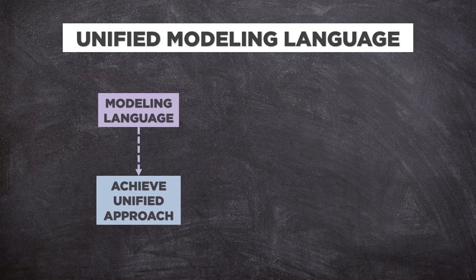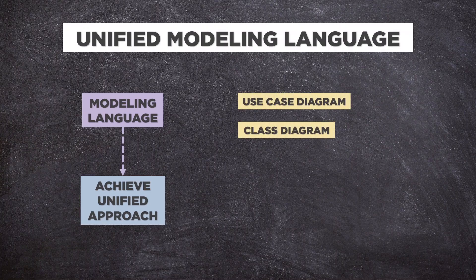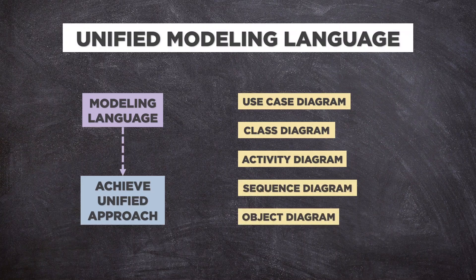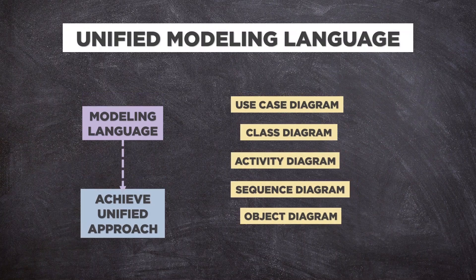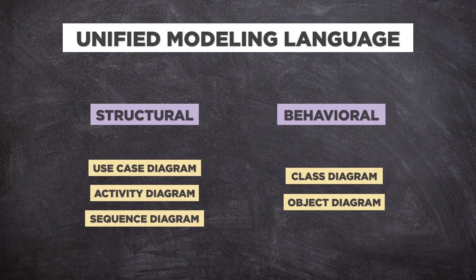There are varieties of diagrams used in UML — for example, use case diagram, class diagram, activity diagram, and sequence diagram. We will look at those one by one later in this video. Before that, there are two main categories: structure diagrams and behavioral diagrams.